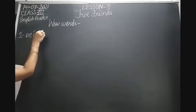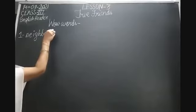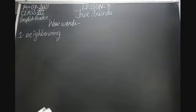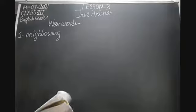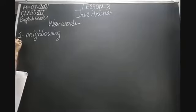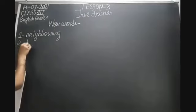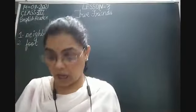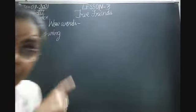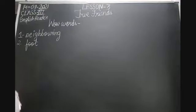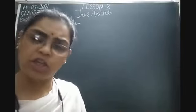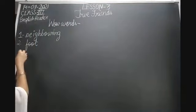The first word is 'neighboring' — N-E-I-G-H-B-O-U-R-I-N-G. Neighboring means nearby — jo cheez paas mein ho, usko hum neighboring bolte hain. The second word is 'foot' — F-O-O-T. Foot means bottom. In this context, foot refers to the bottom part of something, like the foot of a tree.